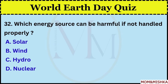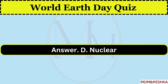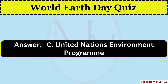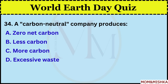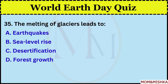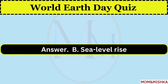Which energy source can be harmful if not handled properly? Nuclear, option D. What is the full form of UNEP? It is United Nations Environment Programme, option C. A carbon neutral company produces zero net carbon, option A. The melting of glaciers leads to sea level rise, option B.